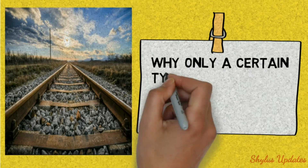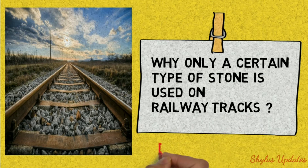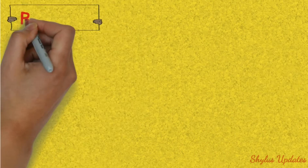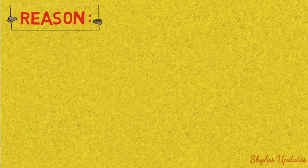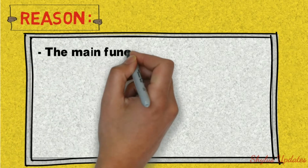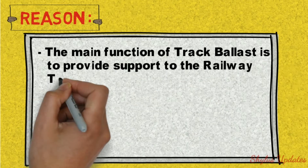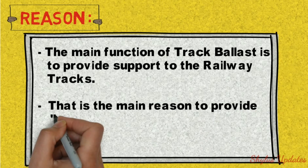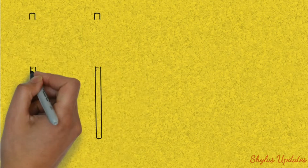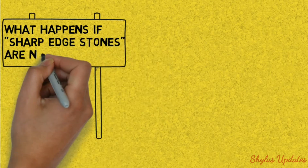Why is only a certain type of stone used on railway tracks? The main function of track ballast is to provide support to the railway tracks. What happens if sharp-edged stones are not provided?